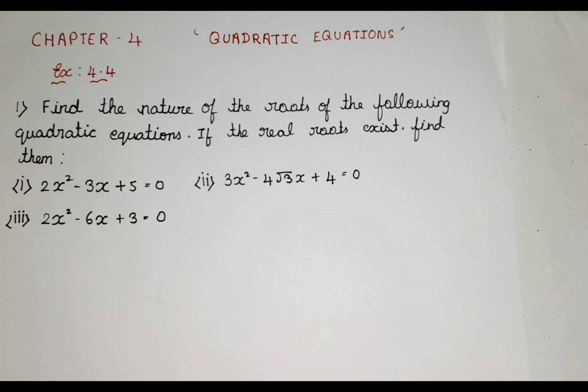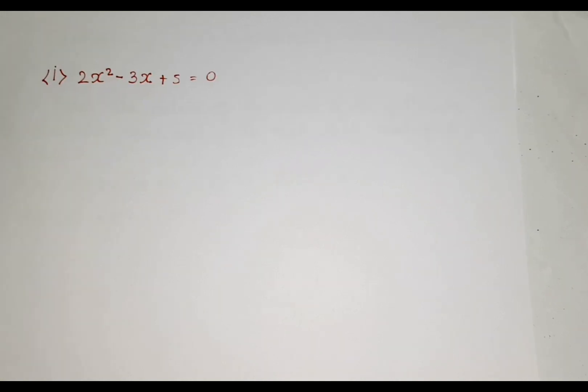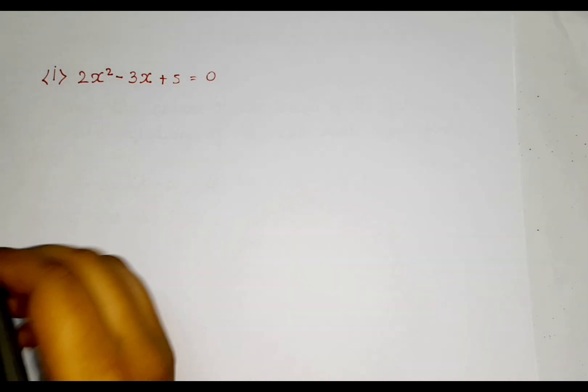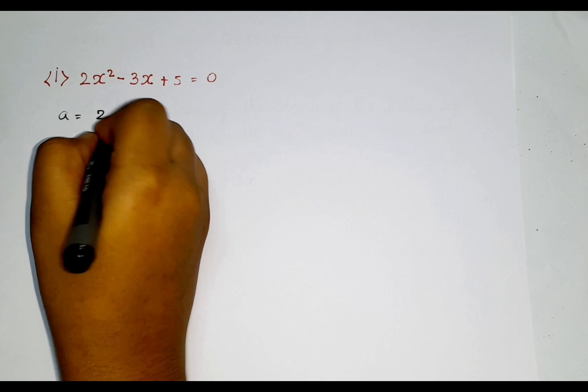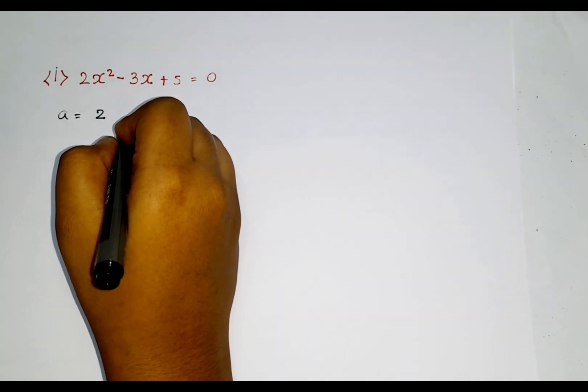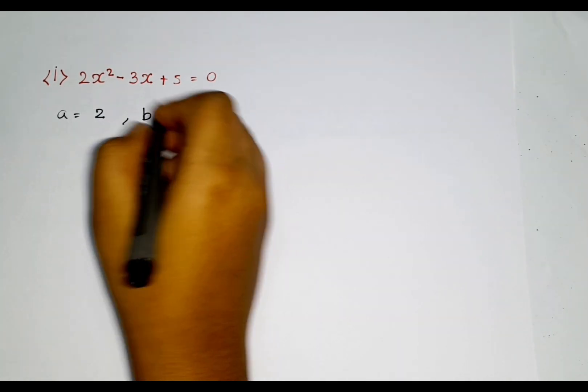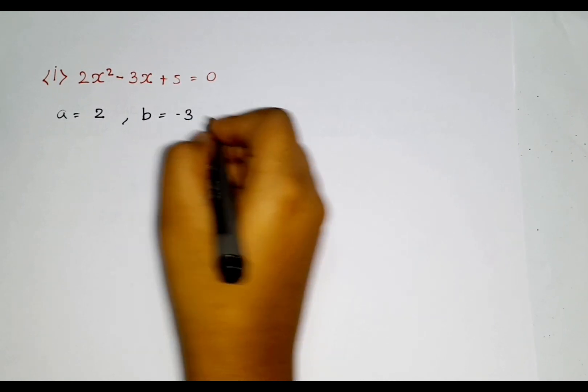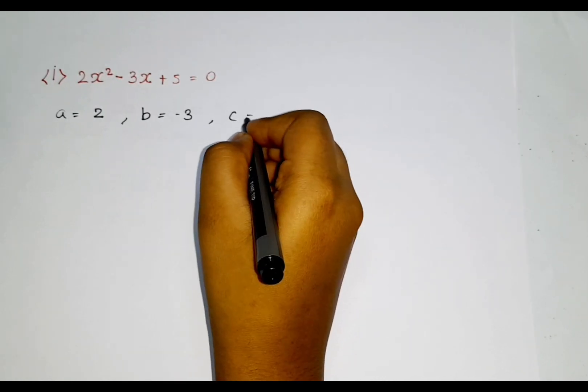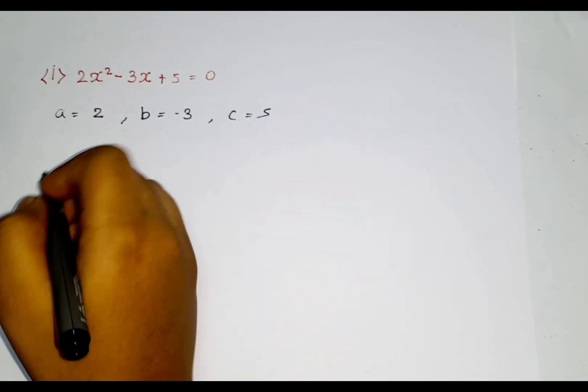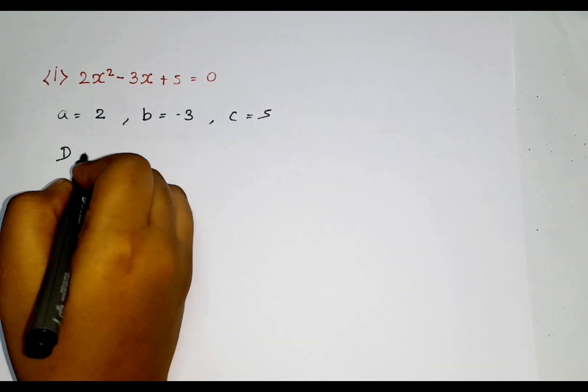First let's write the first subdivision. This is the first subdivision. Now let's write the A value. A value is 2, only the coefficients. And the B value is minus 3. Even the sign is really important. And C value is 5.